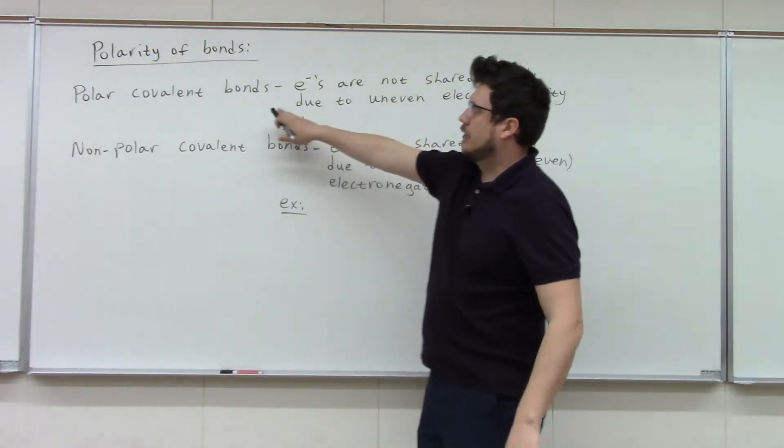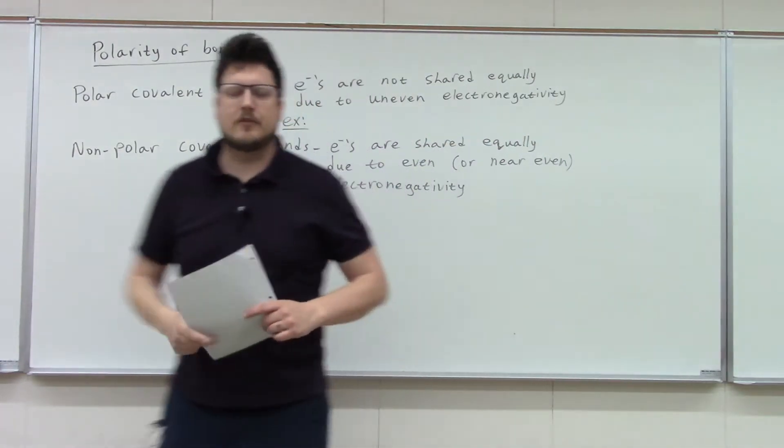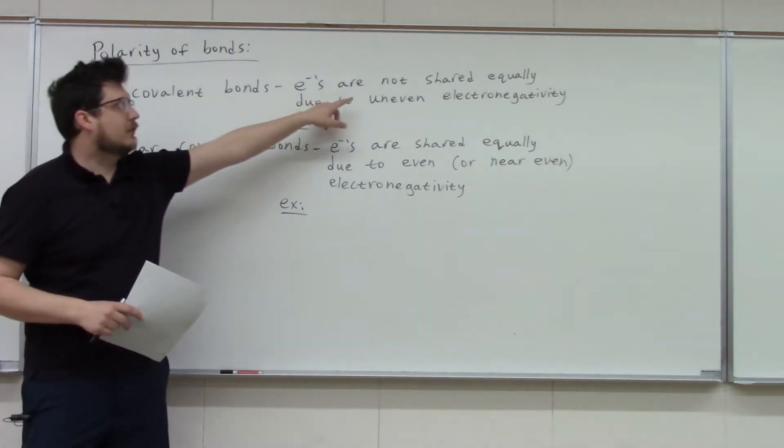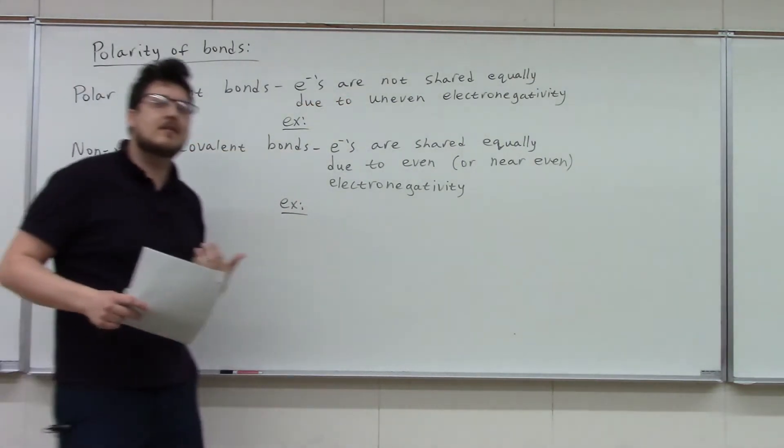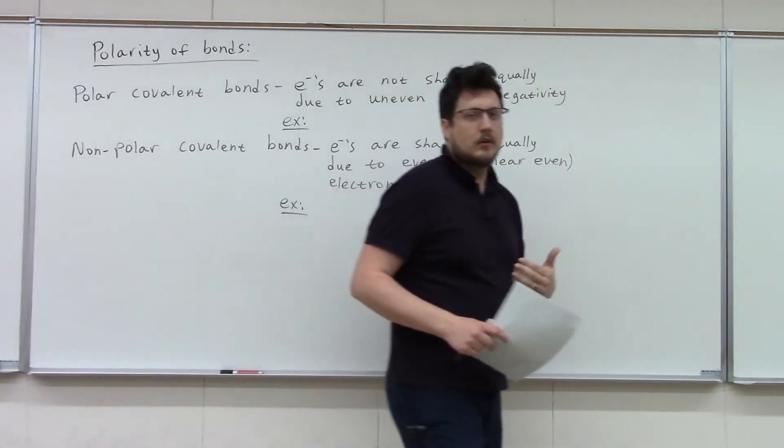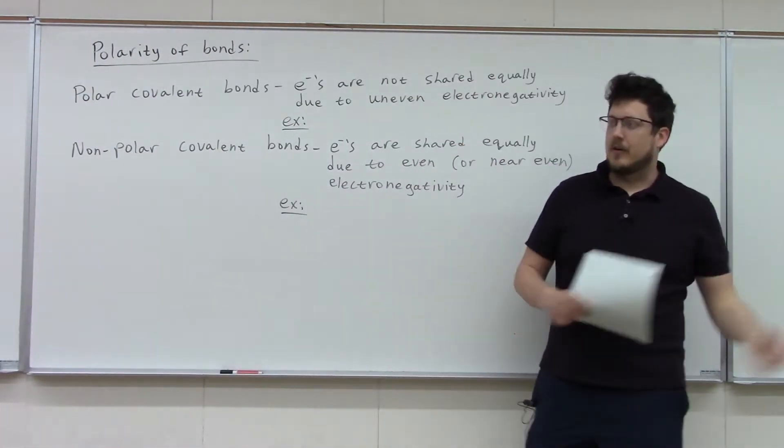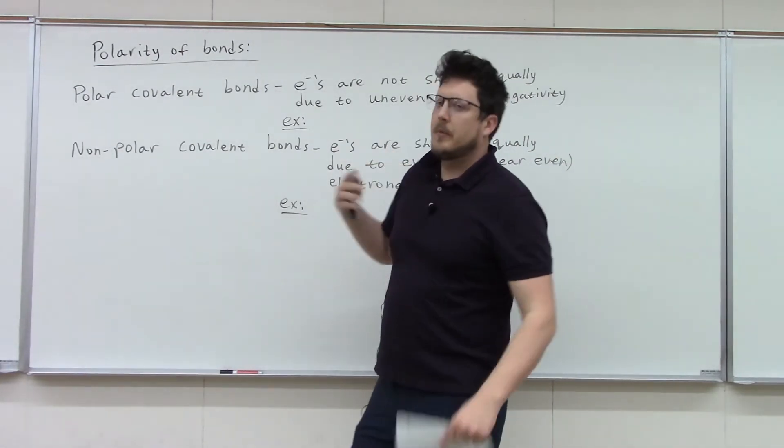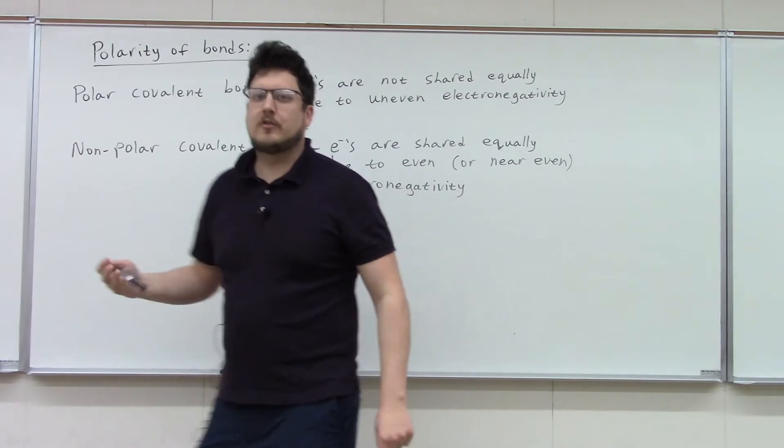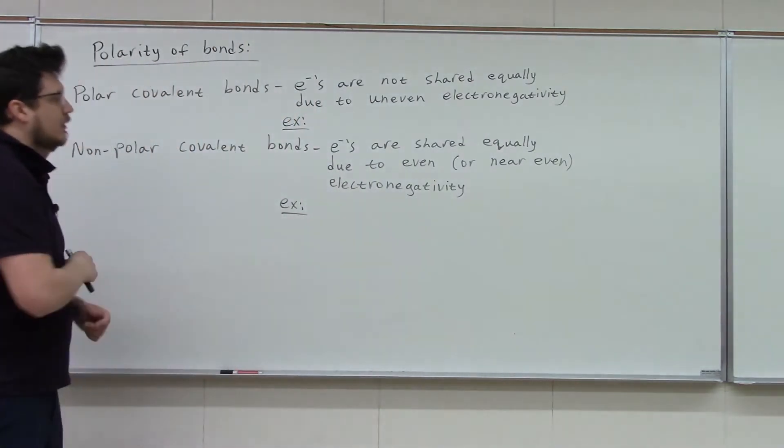So polar covalent bonds, so you have that sharing of electrons, but the electrons are not being shared equally. That is a polar bond. That is a game of tug of war, where one side is winning overall. It's not a total victory where they run off with the rope, that would be an ionic compound. But typically we have two nonmetals with mismatched electronegativities.